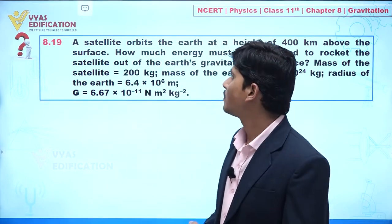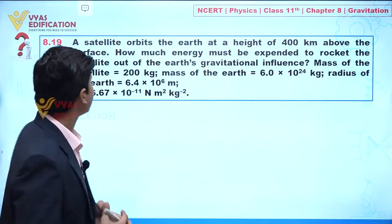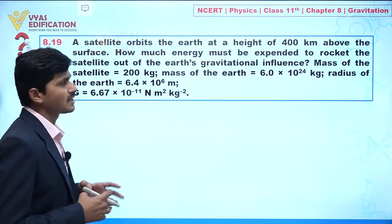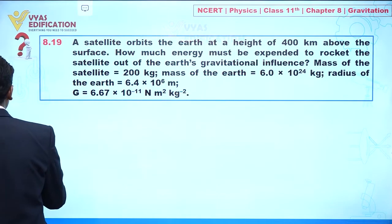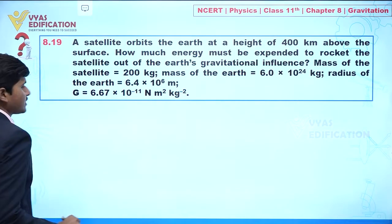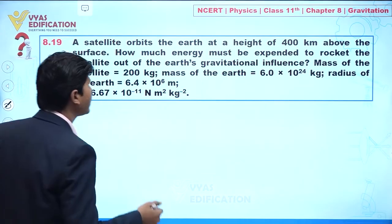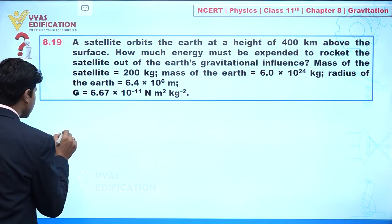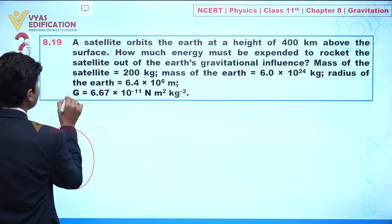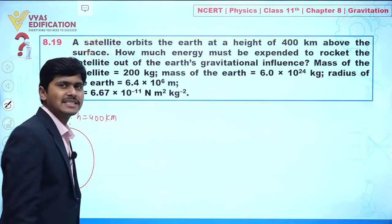We are going to discuss question number 8.19. In this question, a satellite orbits the Earth at a height of 400 kilometers above the surface. Let's suppose this is Earth, and here we have a satellite with height h equal to 400 kilometers.